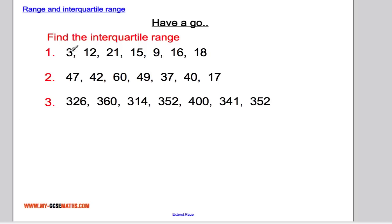Three examples for you to have a go at — see if you can work out the interquartile range. Do remember to put the data in order before you work it out. Hopefully you've had a go at those — here are your solutions: 9, 12 and 36. That's all from me. Hopefully you enjoyed the video and found it useful. Best of luck with revision and I'll talk to you again sometime. Take it easy.